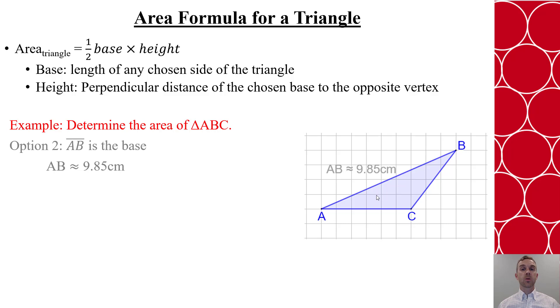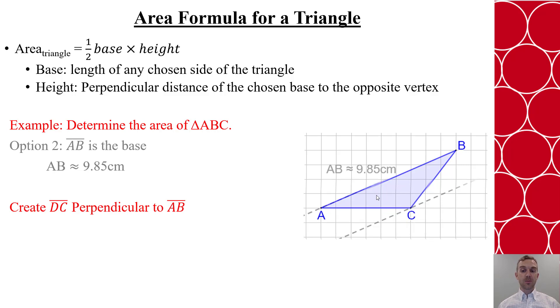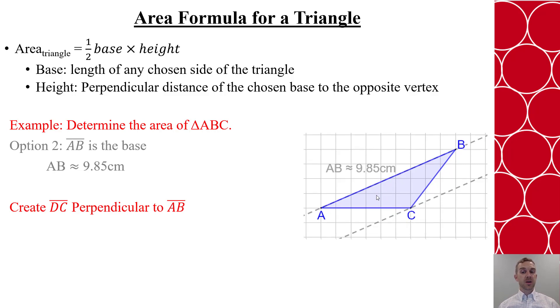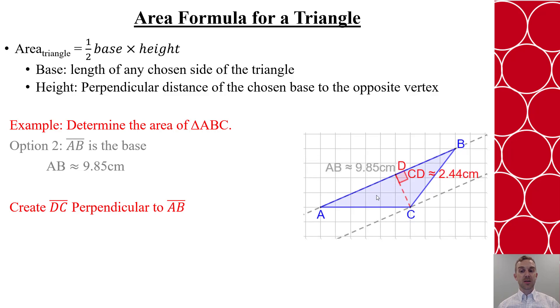Then we have to say we want the perpendicular distance from AB to C. So we're going to create segment DC to be perpendicular to AB. Again, we start with those parallel lines and then create the perpendicular segment, and we find that's approximately 2.44 centimeters. So now when I do my area, that's one half of 9.85 centimeters times 2.44 centimeters. I'm going to use three significant digits in my final solution, which is approximately 12 square centimeters.